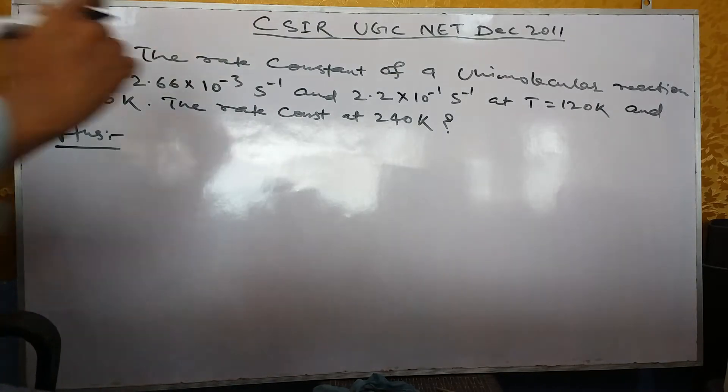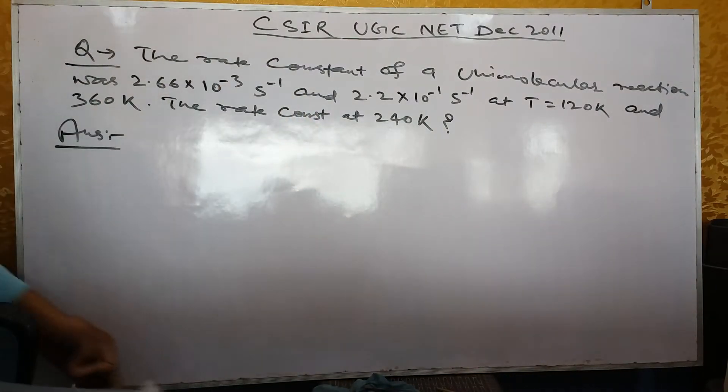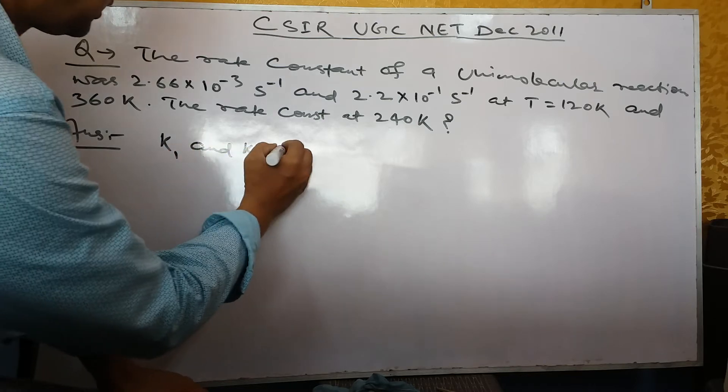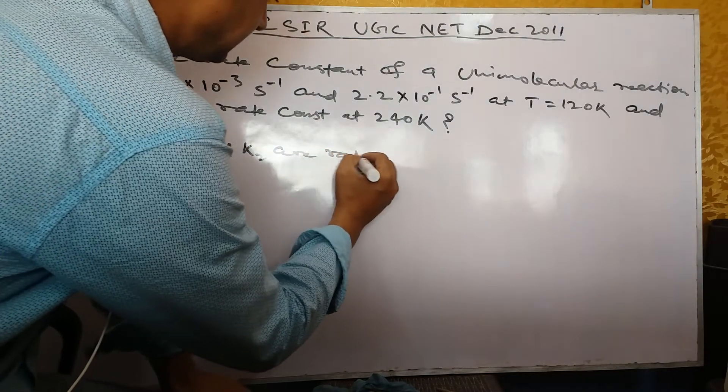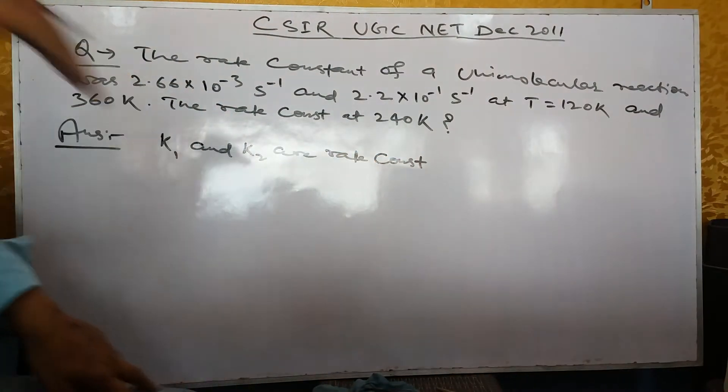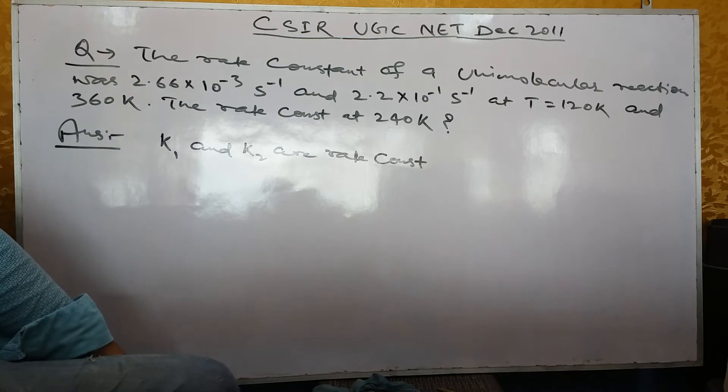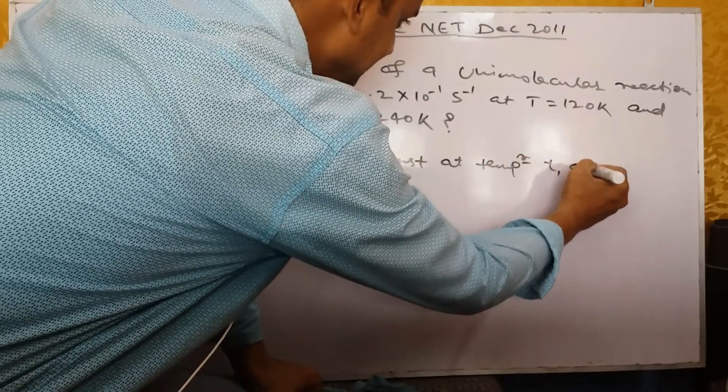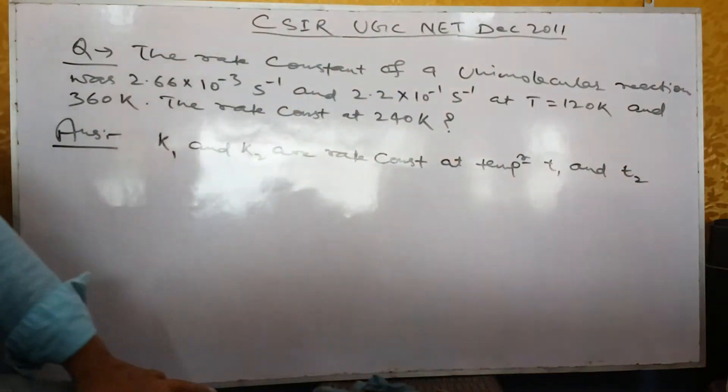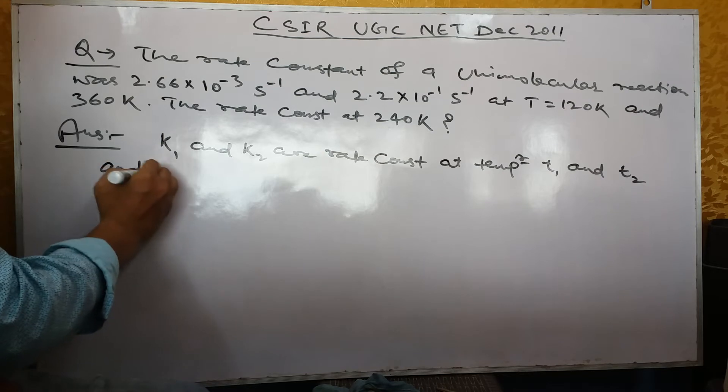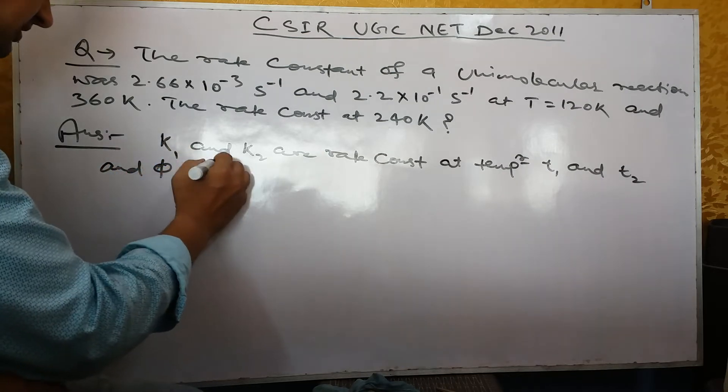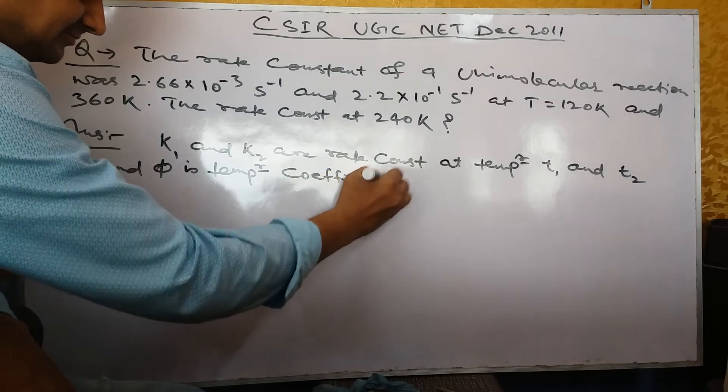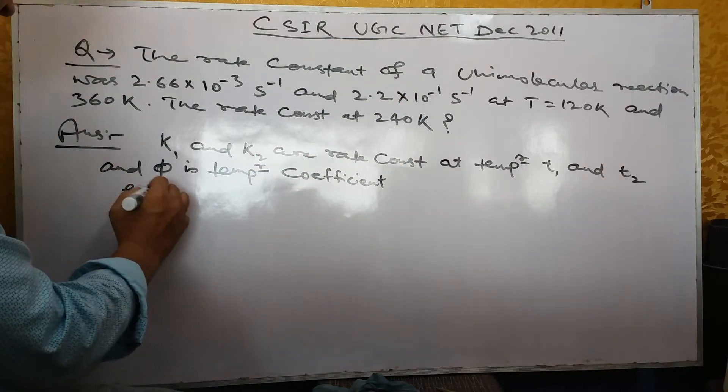In this problem, first of all, K1 and K2 are rate constants at temperatures T1 and T2. And what is φ? φ is the temperature coefficient. There is a formula which is K2/K1 = φ^(ΔT/10).